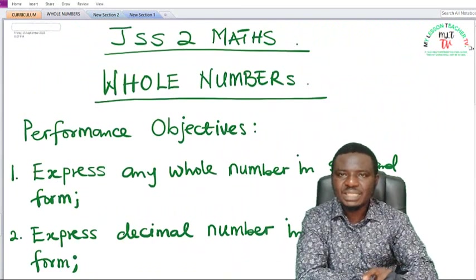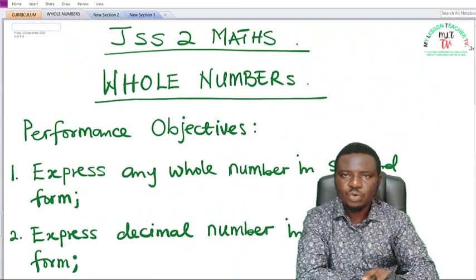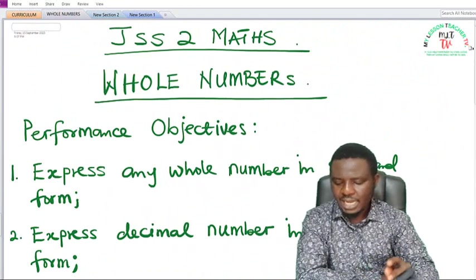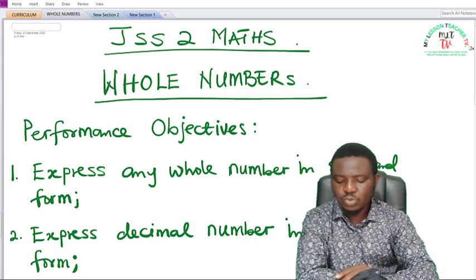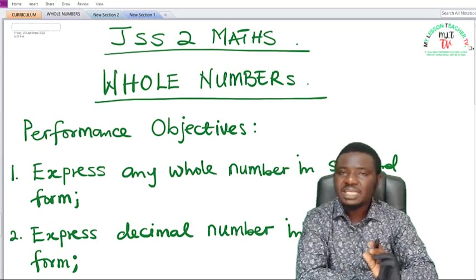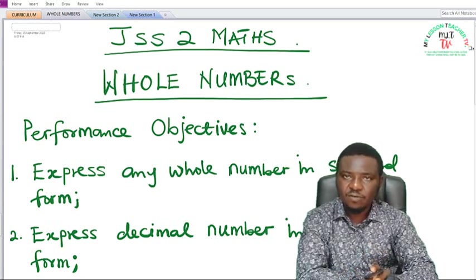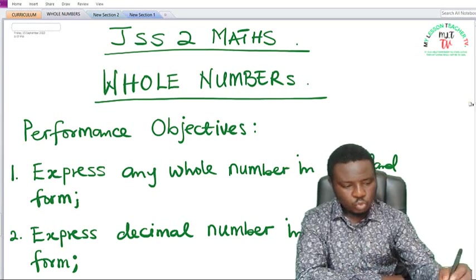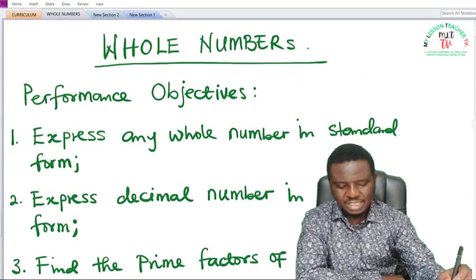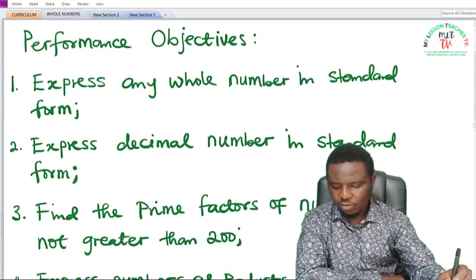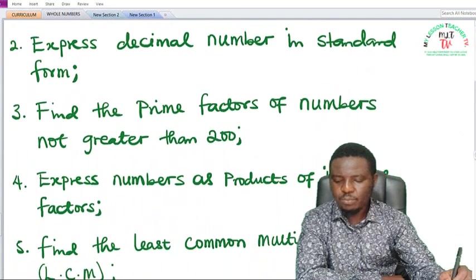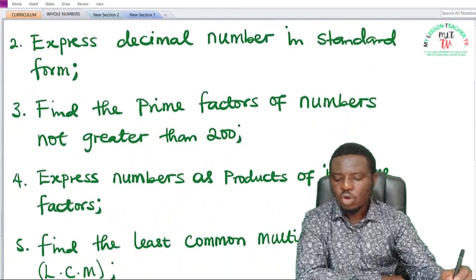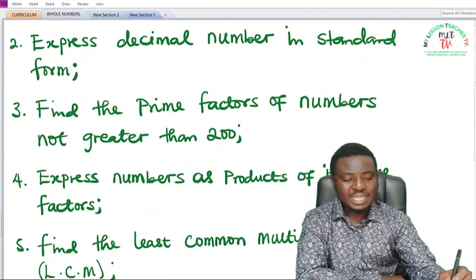Under whole numbers, these are some of the objectives which we intend to achieve. At the end of the class, students should be expected to: one, express any whole number in standard form; two, be able to express decimal numbers in standard form; and three, be able to find the prime factors of numbers not greater than 200.